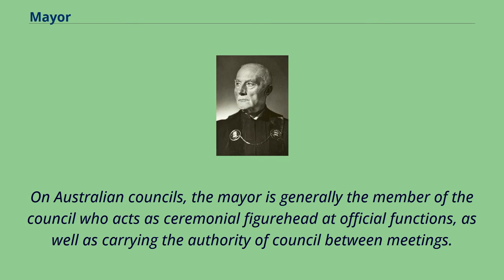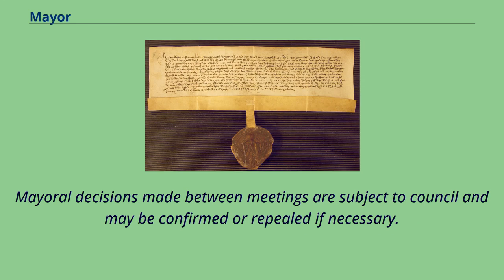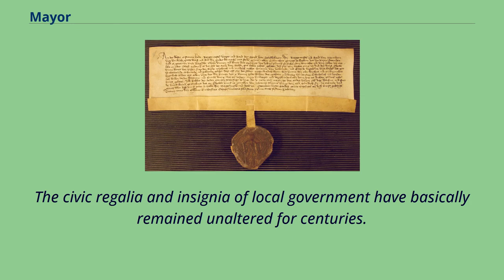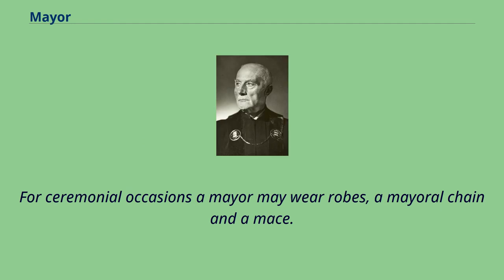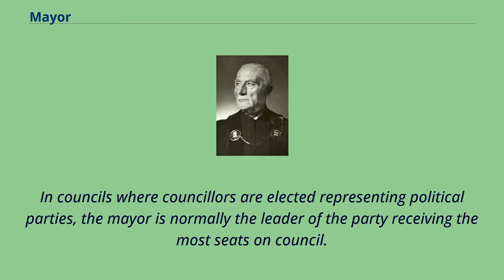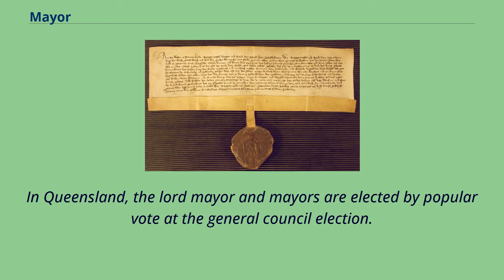On Australian councils, the mayor is generally the member of the council who acts as ceremonial figurehead at official functions, as well as carrying the authority of council between meetings. Mayoral decisions made between meetings are subject to council and may be confirmed or repealed if necessary. Mayors in Australia may be elected either directly through a ballot for the position of mayor at a local government election, or alternatively may be elected from within the council at a meeting. Mayors have the title of 'His/Her Worship' whilst holding the position. In Queensland, the lord mayor and mayors are elected by popular vote at the general council election.